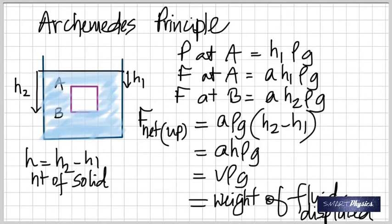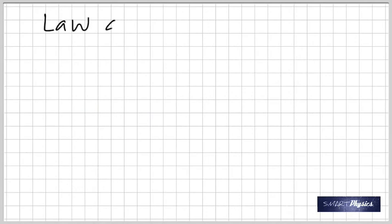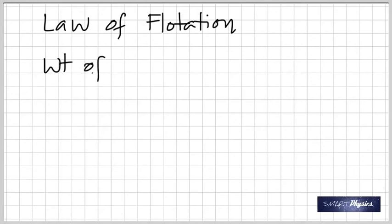The law of flotation states: the weight of a floating object equals the weight of fluid displaced. That is the boundary condition for floating. The buoyant force F_B equals mg — the weight of the object.